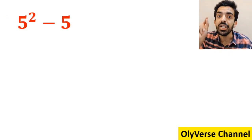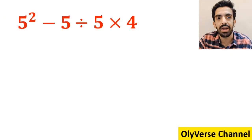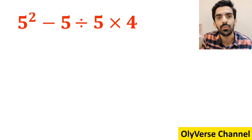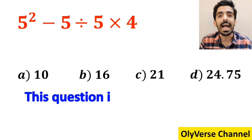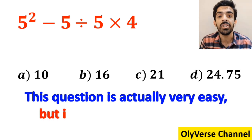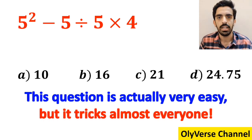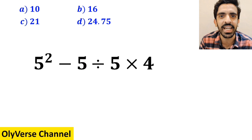What is the value of the expression 5 squared minus 5 divided by 5 then times 4? Which option do you think is the correct answer to this question? This expression is actually very easy but it tricks almost everyone. Let's break it down and solve it together.